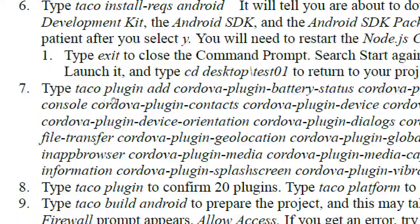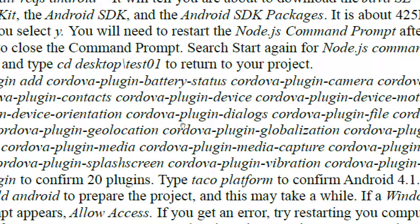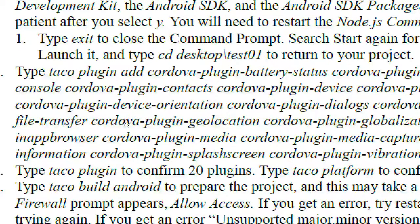We'll also type 'taco plugin add' — these are all the ways we're able to access the features of a device. Looking through the list you'll see camera, geolocation, device orientation, file transfer — we'll be able to save stuff from our app into the SD memory card of the device. We'll be able to check the battery status so it pops up and alerts you you're at 10%. We can check orientation so that if we orient horizontally something different happens on screen.